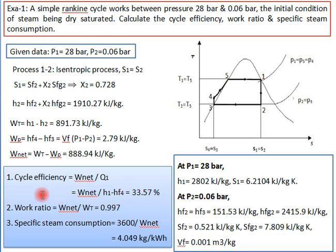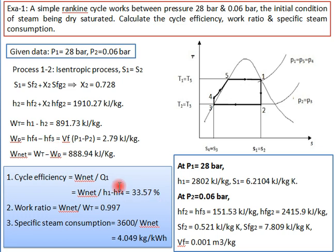For calculation of cycle efficiency, work ratio, and specific steam consumption, we need the enthalpy values at different points. Cycle efficiency equals W_net divided by Q1, where W_net equals W_t minus W_p. W_t equals h1 minus h2, and W_p equals hf4 minus hf3.